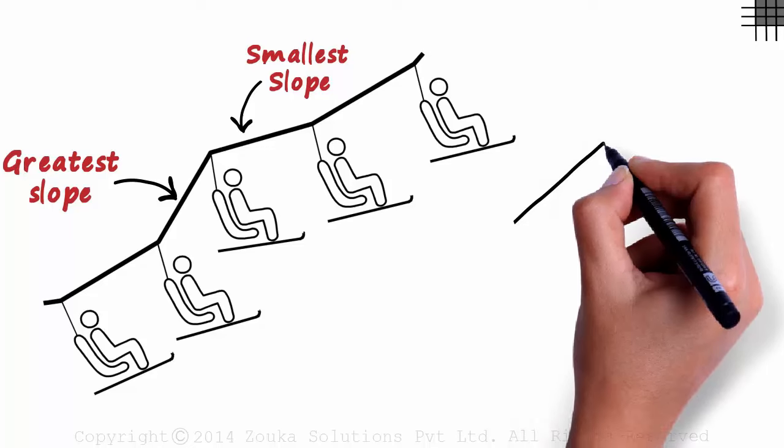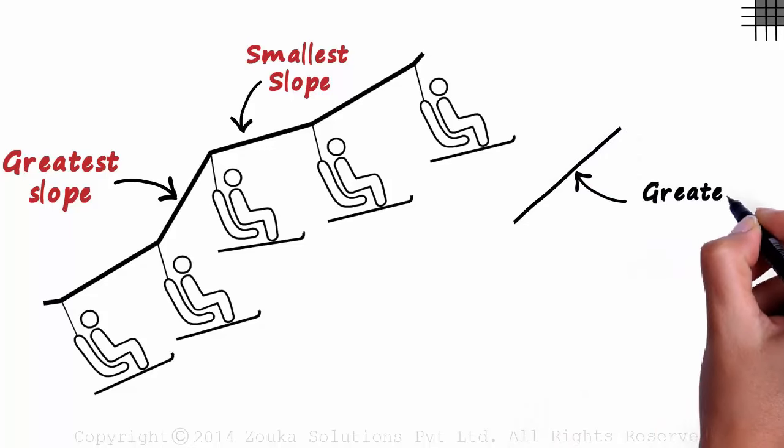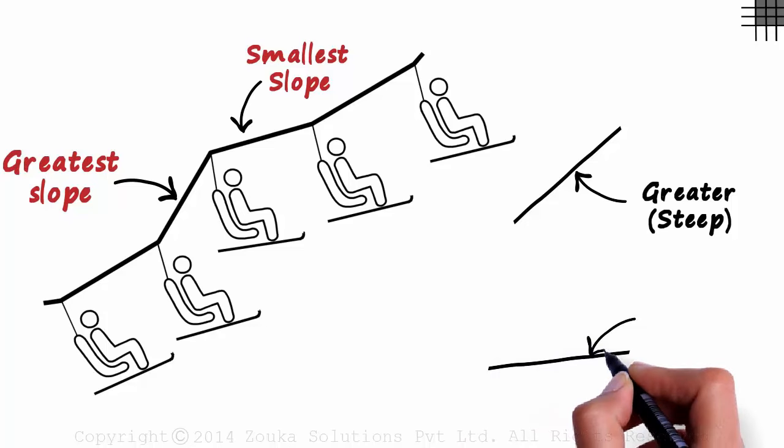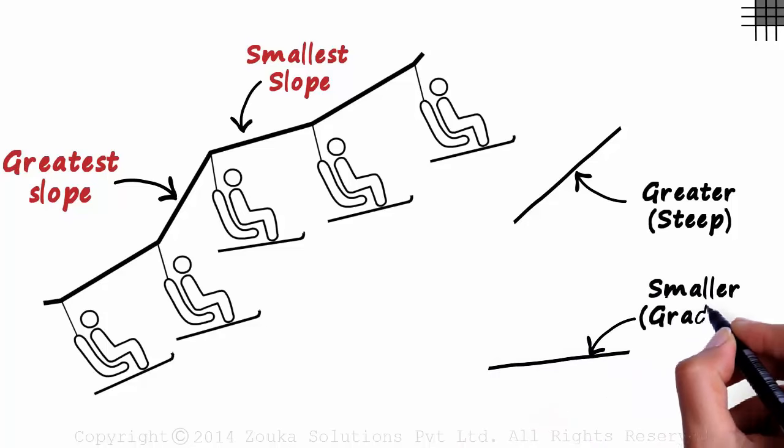A line like this will have a greater slope if it has a steep inclination. And a line like this one which has a gradual inclination will have a smaller slope.